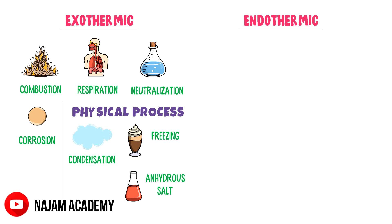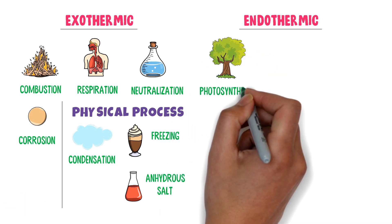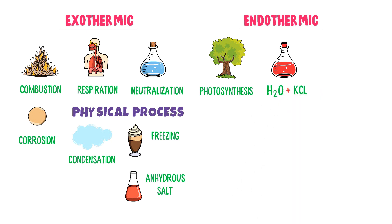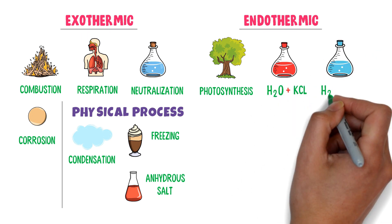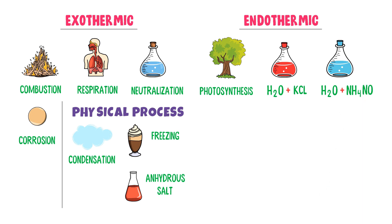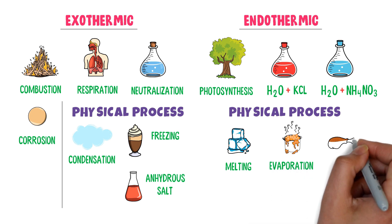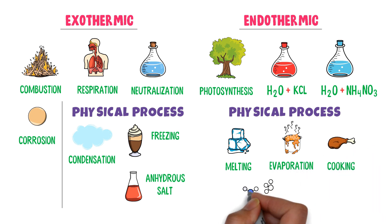Coming to endothermic reactions, common examples include: photosynthesis; mixing water with potassium chloride; and mixing water with ammonium nitrate. Some physical processes that are endothermic include melting like ice into water, evaporation, cooking, and splitting a gas. Note down all these exothermic and endothermic reactions.